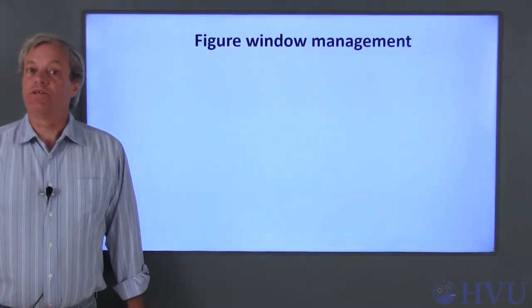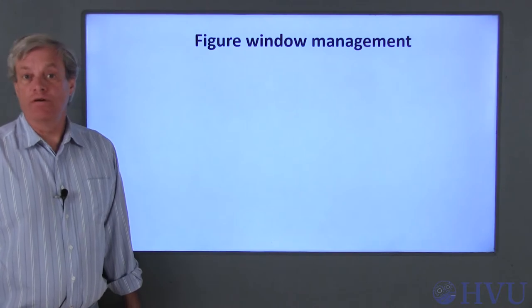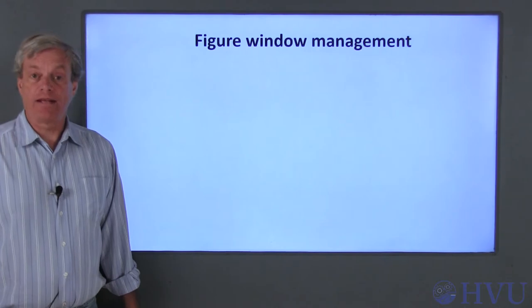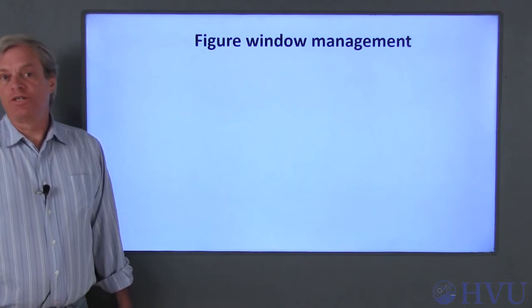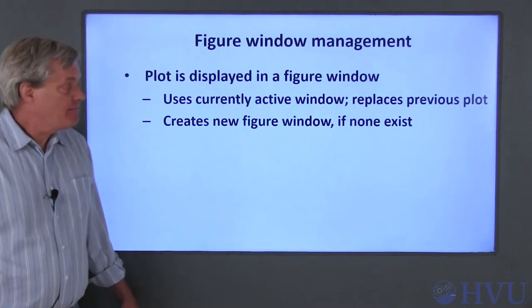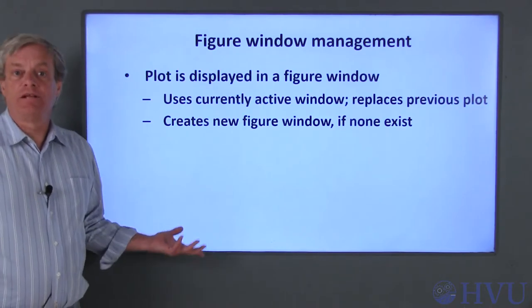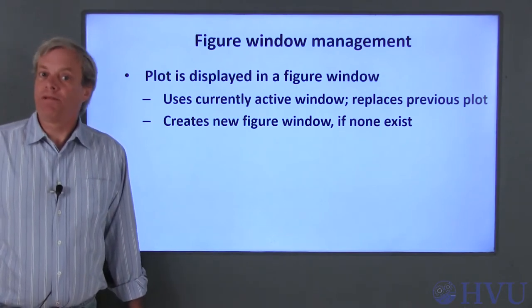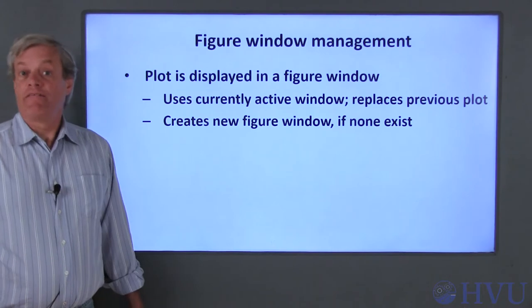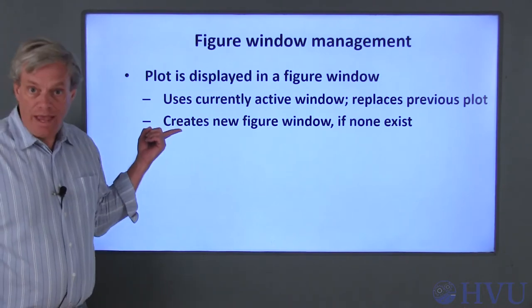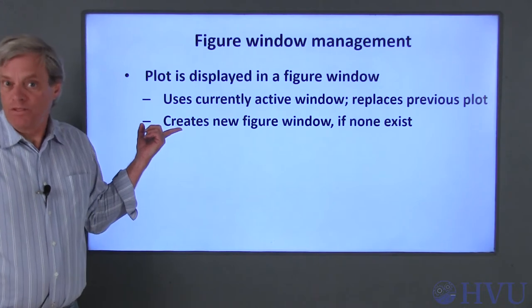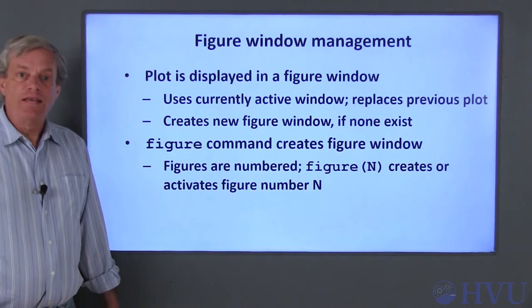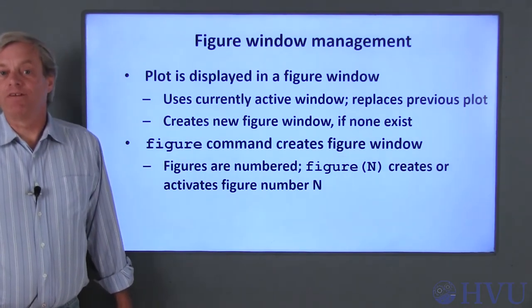When a plot command is executed, the resulting plot is displayed in a figure window. When we did our earlier simple example, the plot command created a figure window automatically. However, you can control the creation of the figure window yourself. The plot is displayed in the currently active figure window, and any plot previously displayed in that window is replaced with the new plot. If there is no current figure window available, one is created. You can use the figure command to create a new figure window or activate an existing one.